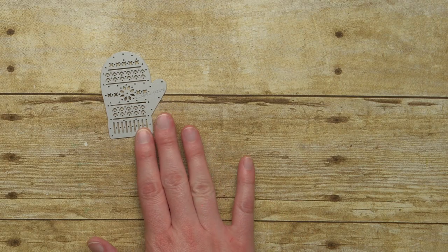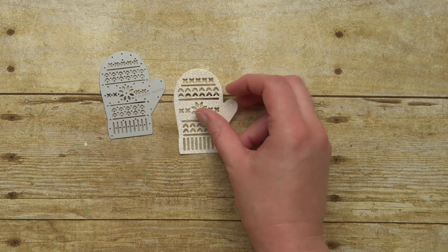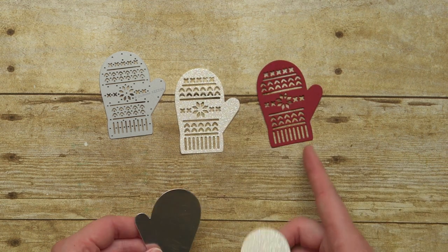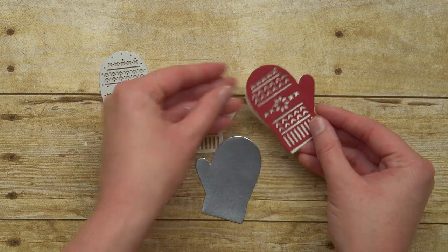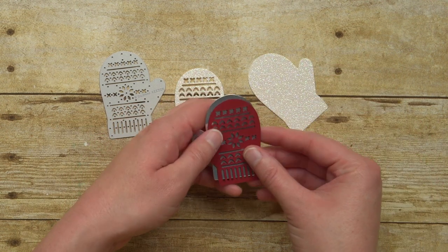The framelit also includes this detailed mittens piece here and this is what it looks like when it's cut out. The idea with this one is that you can layer these pieces up to create even more glitzy mittens like that.